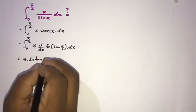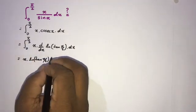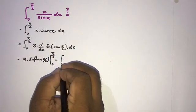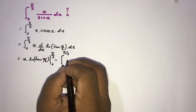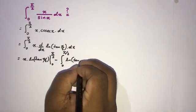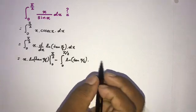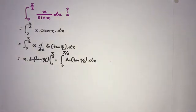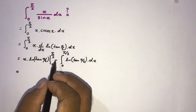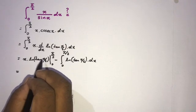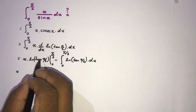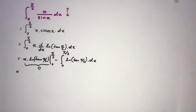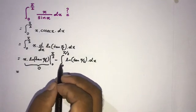Applying integration by parts gives us x times natural log of tan(x/2) evaluated from 0 to π/2, minus the integral from 0 to π/2 of natural log of tan(x/2) times the derivative of x, which is 1, dx. Plugging in the bounds: at π/2, tan(π/4) = 1 and ln(1) = 0; at 0, the term is also 0. So the boundary term vanishes.